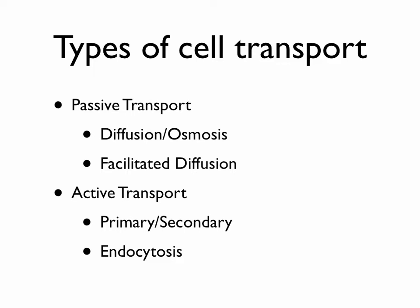Cells can also use energy in active transport. They usually do this to pump something into or out of the cell against diffusion — that is, against the concentration gradient. So instead of having stuff go from high concentration to low concentration, they're taking nutrients that are in low concentrations outside the cell and pumping them into the cell where there's a higher concentration of those items. To do that, they have to use energy.